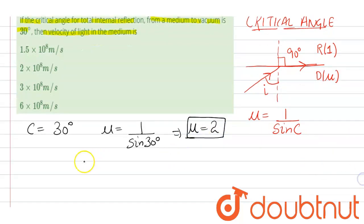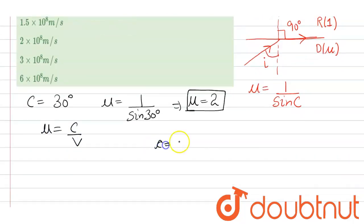Now we apply this formula mu equal to c upon v. And here c is small c that is 3 into 10 to the power 8 meter per second. And we can calculate v from here.